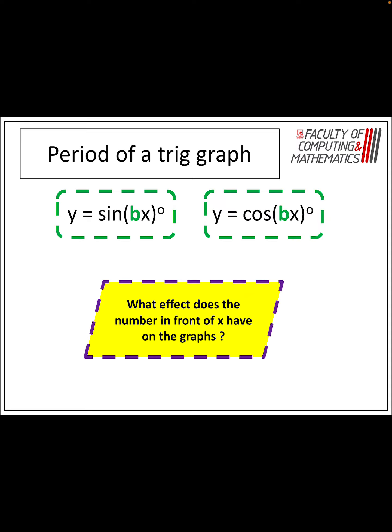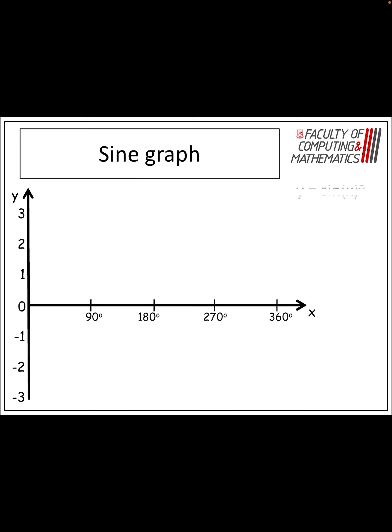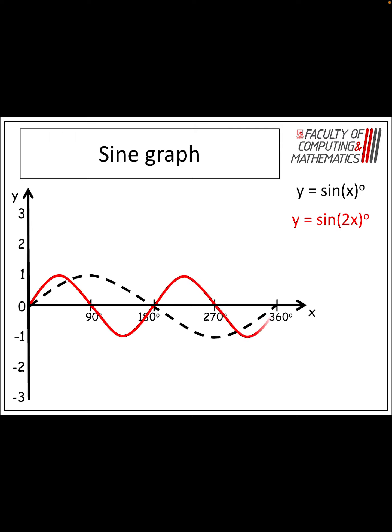So the period of the graph — what happens with the number in front of the x? Let's take a look. We've got sine x. But what happens if we've got sine of 2x? This affects the period. With that 2x in there, I want it to repeat not every 360 degrees but every 180 degrees, and I end up with two full cycles — hence sine 2x.